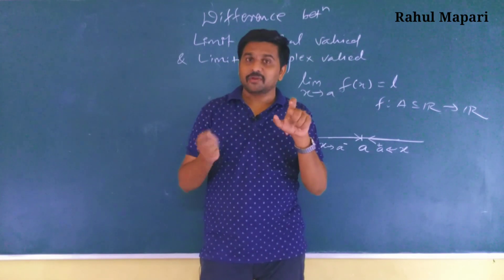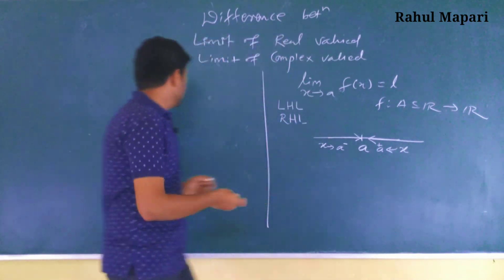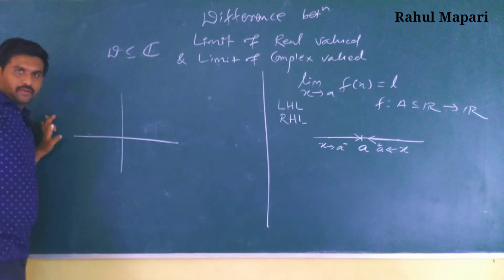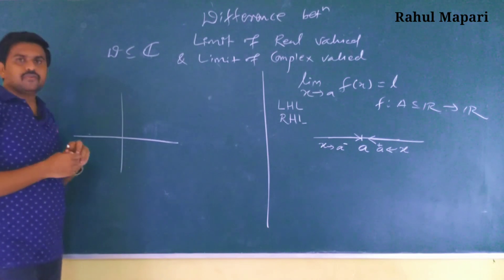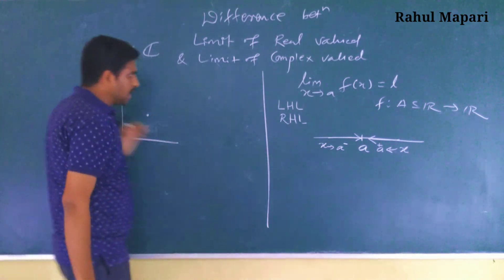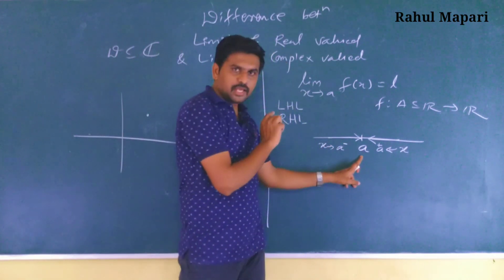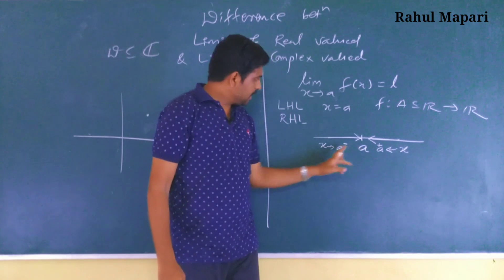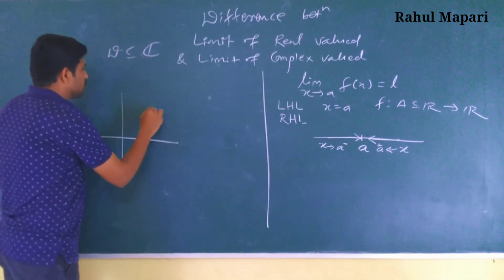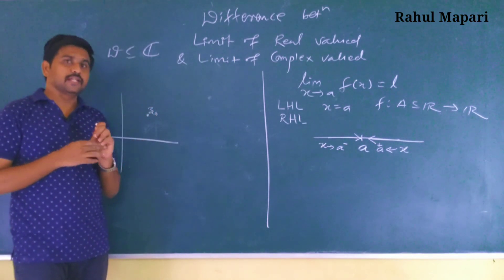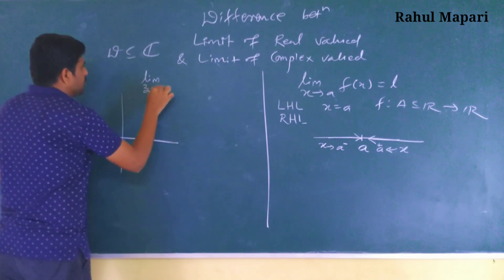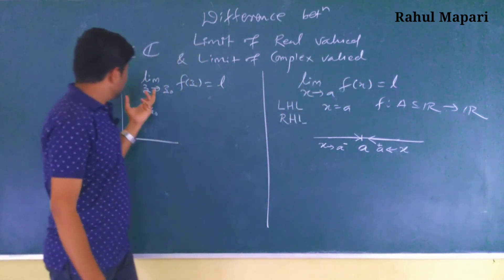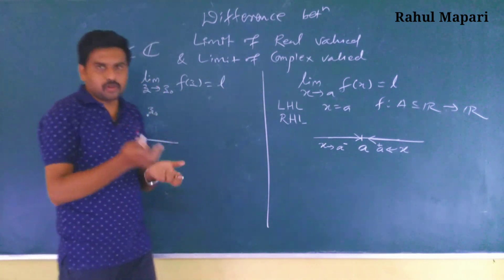You do not see left-hand and right-hand limits in complex-valued functions. Here, the domain D is a subset of the set of complex numbers, so we take any number on the complex plane. Just as we had x equals a on the real line, we now take any complex number z₀, and we find the limit: limit as z tends to z₀ of f of z equals l. The symbols look the same, but there is a fundamental difference.